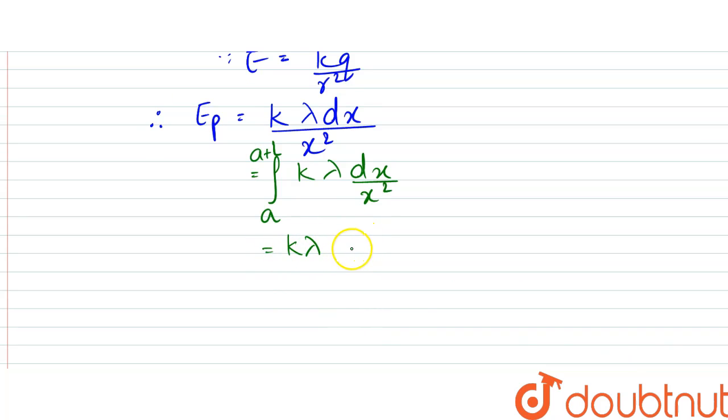And we would be integrating 1 by x square from A to A plus L. So integration of this would be minus 1 by x from A to A plus L.